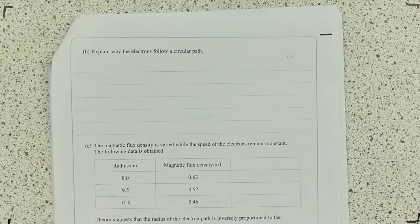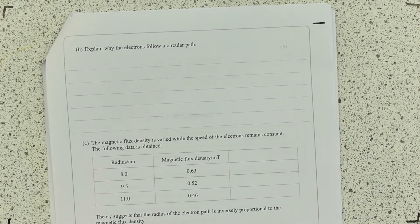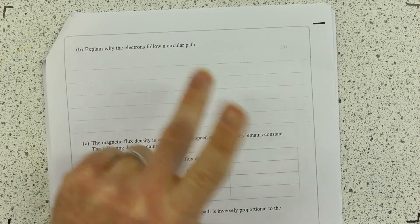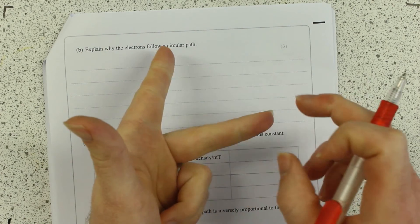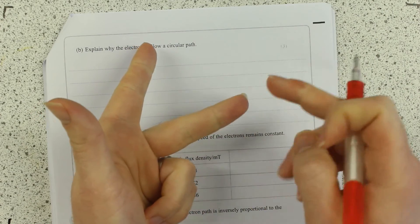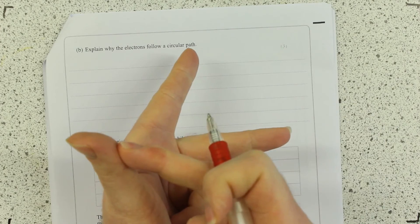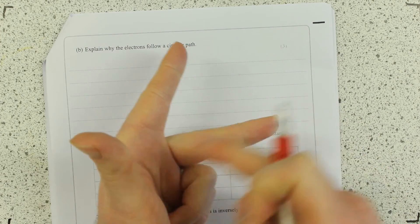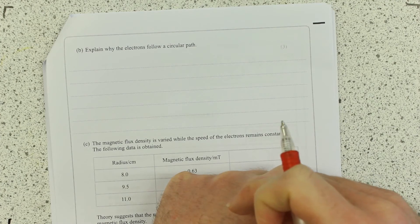Next bit, why do they follow a circular path? All of them flowing in a circular path is all about left-hand rule. Get your left hand out. We've got magnetic field, current, which in this case is the flow of electrons in that direction, and the force. You can see they are all interacting at right angles and that's the key thing there.